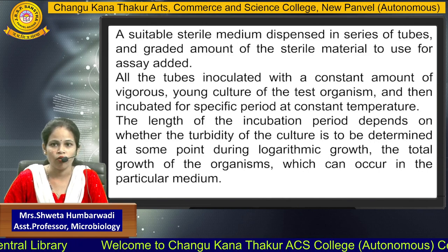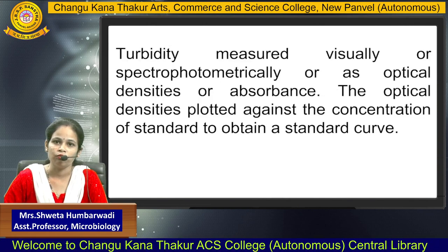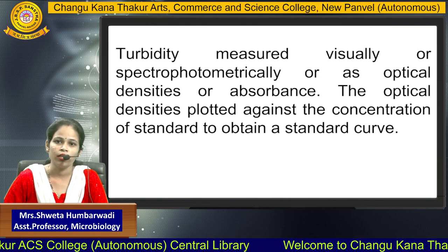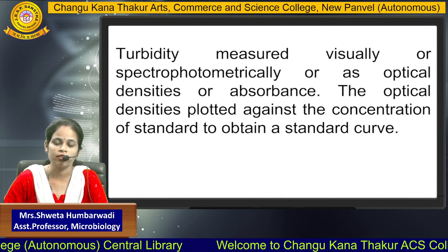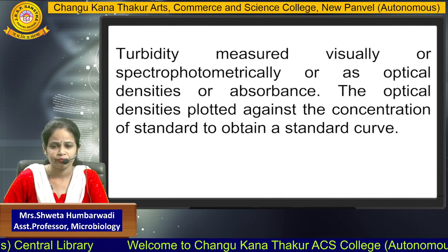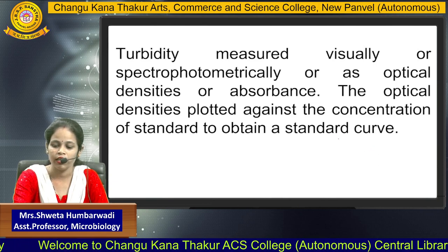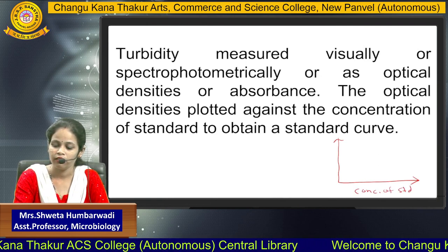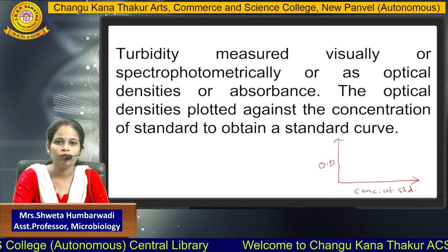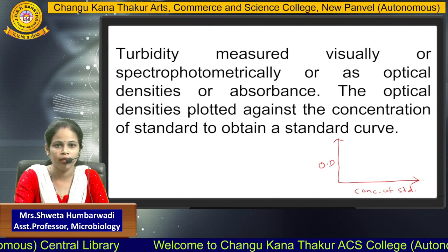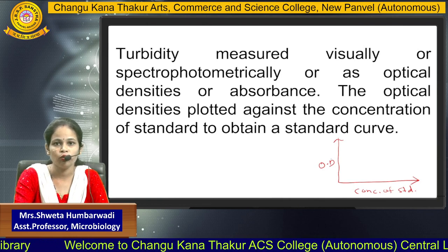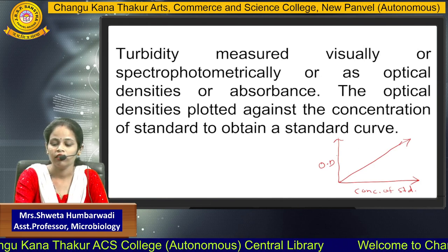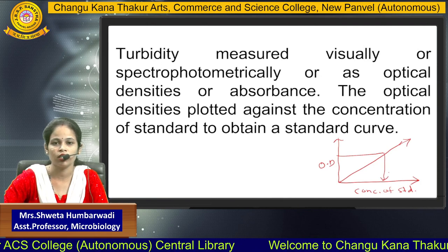The total growth of the organism occurring in the particular medium is also considered. Turbidity is measured visually or spectrophotometrically, giving an OD value in terms of optical density or absorbance. The optical density is plotted against the concentration of the standard to obtain a standard curve, and from this curve we can determine the concentration of an unknown compound. Here on the x-axis we plot the concentration of the standard and on the y-axis we plot OD — unlike diffusion assay where zone diameter in millimeters is plotted on the y-axis.